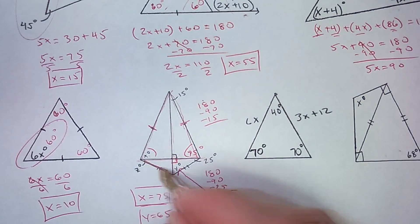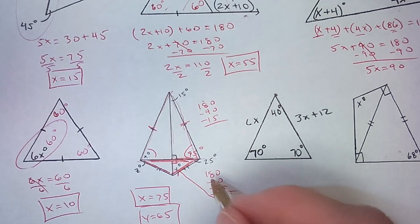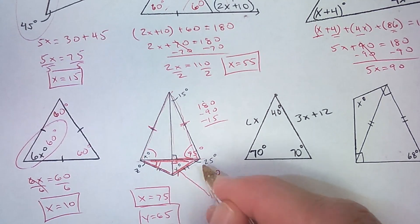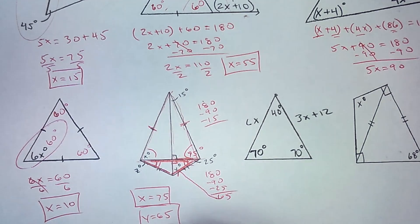Now this bottom triangle is another isosceles triangle. And its base angles are congruent. And since this one is 25, so is this one. So z is 25.